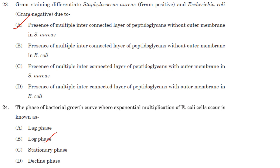The phase of the bacterial growth curve where exponential multiplication of E. coli cells occurs is known as the log phase. Answer is option B.